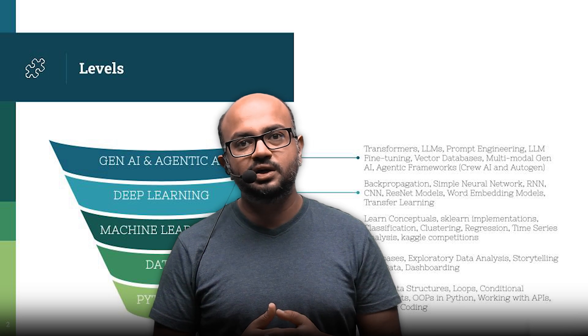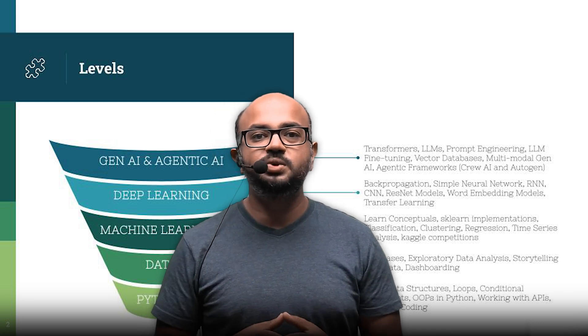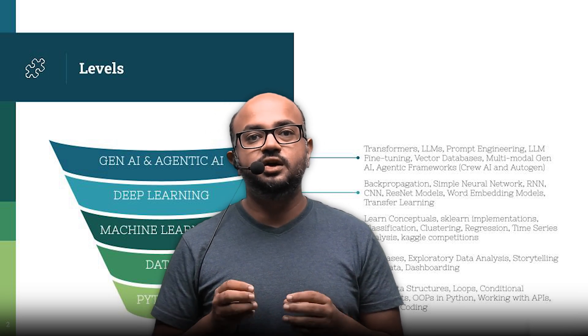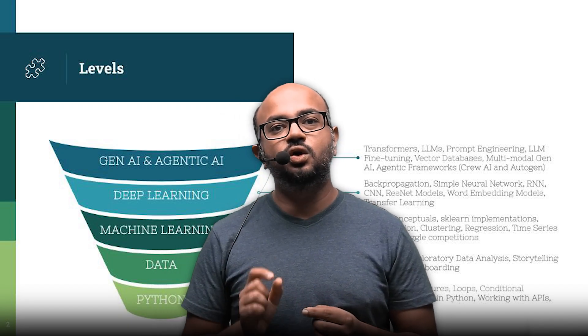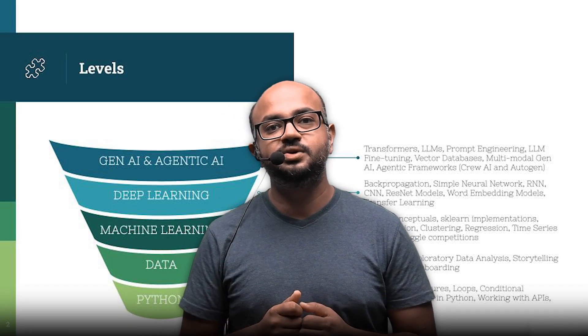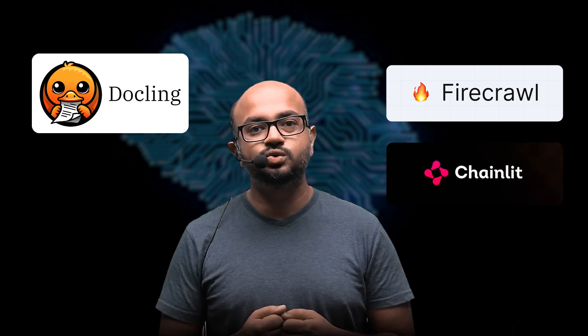The first project you should build around LLMs and Generative AI should be a RAG-based project — a retrieval augmented generation project. You should also learn about vector databases to optimize your RAG pipeline. Finally, you should look at the various tools emerging in Generative AI, such as LangChain, Firecrawl, and Chainlit, as these are really important tools to understand.